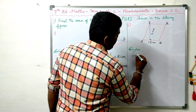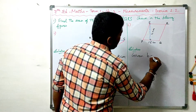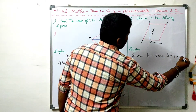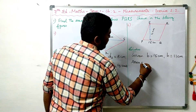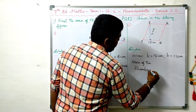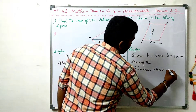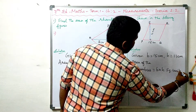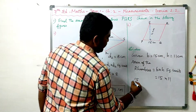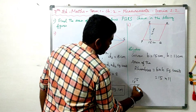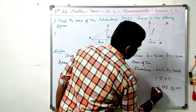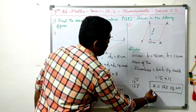Given data: base B = 15 cm, height H = 11 cm. Area of the rhombus = B into H square units. Substituting: 15 into 11 = 165. So the area is 165 square centimeters. This is the area of the given rhombus PQRS.